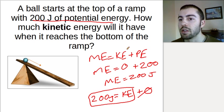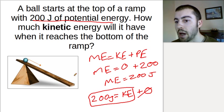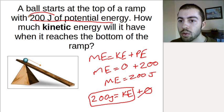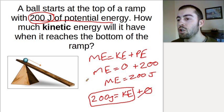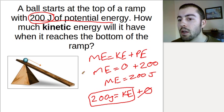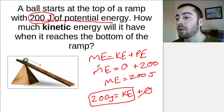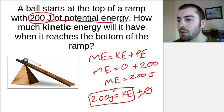If energy is conserved and we have all potential energy at the top, and we roll down to the bottom of the ramp, we would have all kinetic energy. All 200 joules of potential energy must have been converted to kinetic energy by the bottom of the ramp. This makes the assumption that nothing is taking away energy. Realistically, some energy would be lost to friction, heat, or other sources. But in a perfect world, we would end up with 200 joules of kinetic energy at the bottom of the ramp.